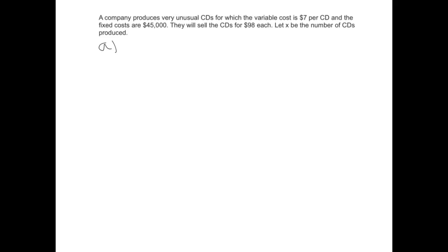The first part asks us to create a cost formula. They call the cost formula C, and in this case there's really two pieces that make up the cost. That's the cost per CD of producing that $7, which I didn't circle very well, and the fixed cost, which is the $45,000.